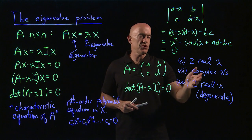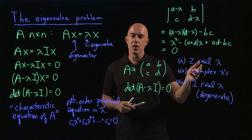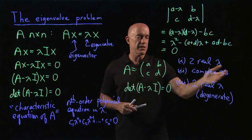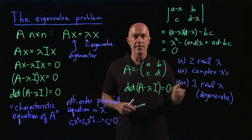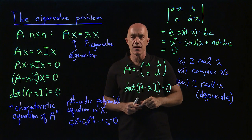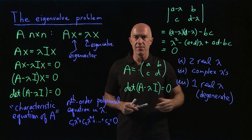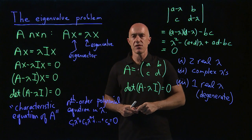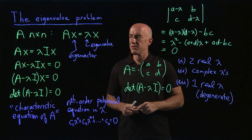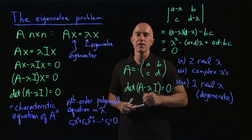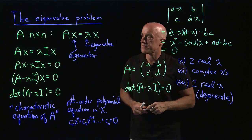To see what the eigenvectors look like, we should work some more concrete examples. I want to show you some matrices that may have complex eigenvalues or degenerate eigenvalues, and we'll be doing that in the next videos.